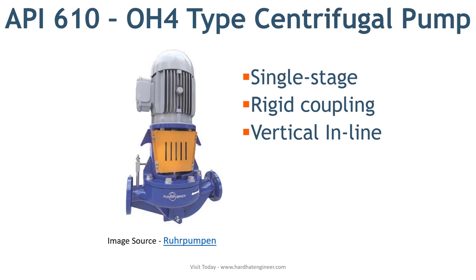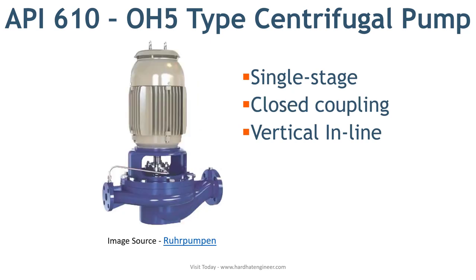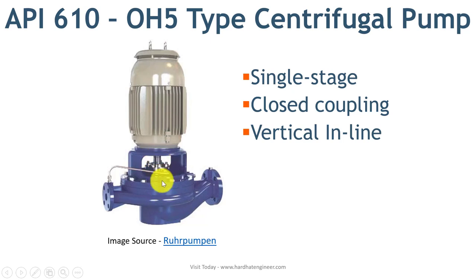The next is OH5 type centrifugal pump. OH5 is a close coupled pump, meaning the impeller is directly mounted on the motor shaft. It is a vertical inline single stage overhung pump.